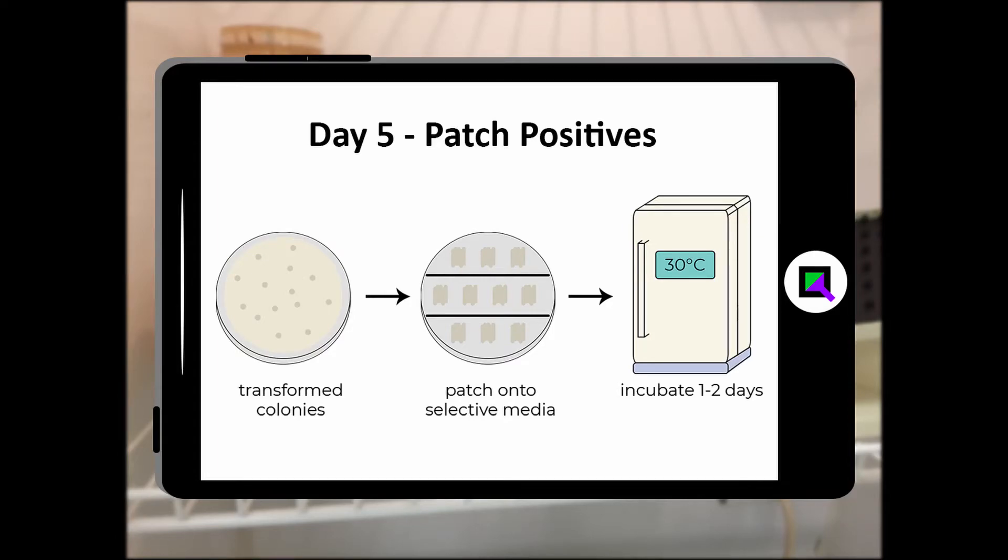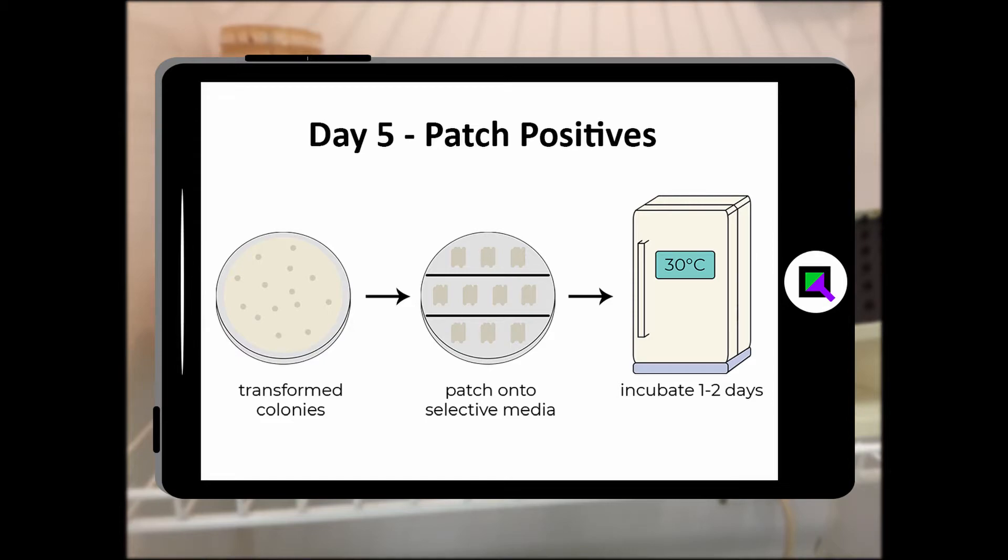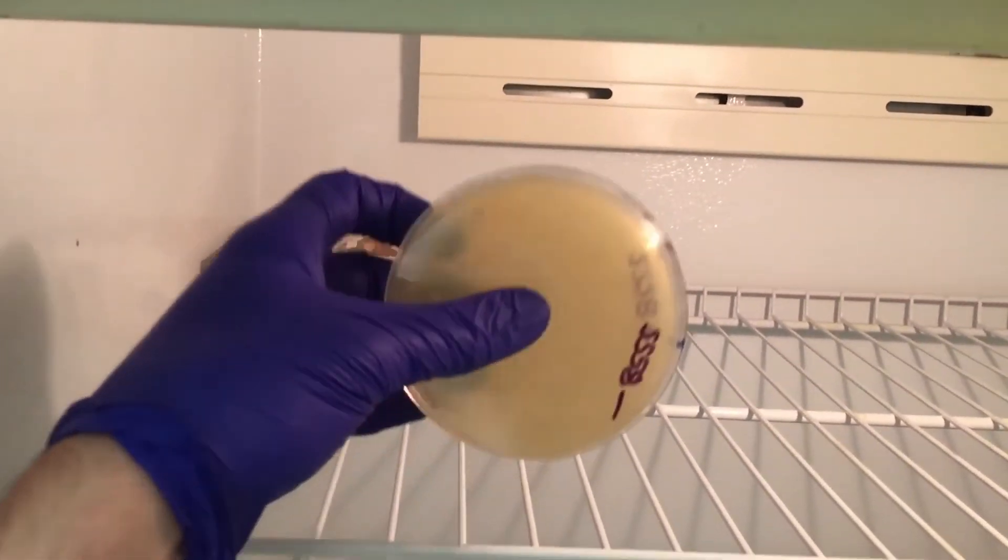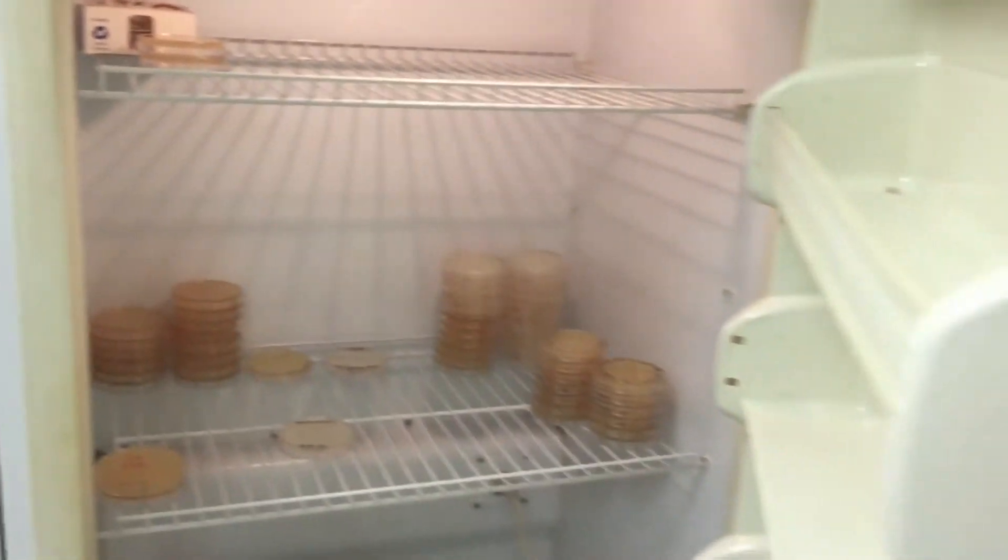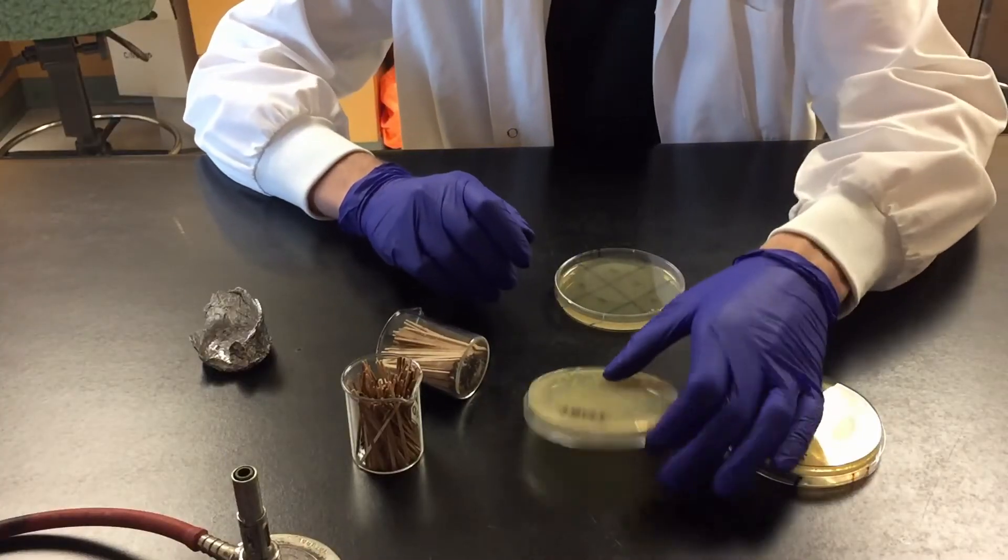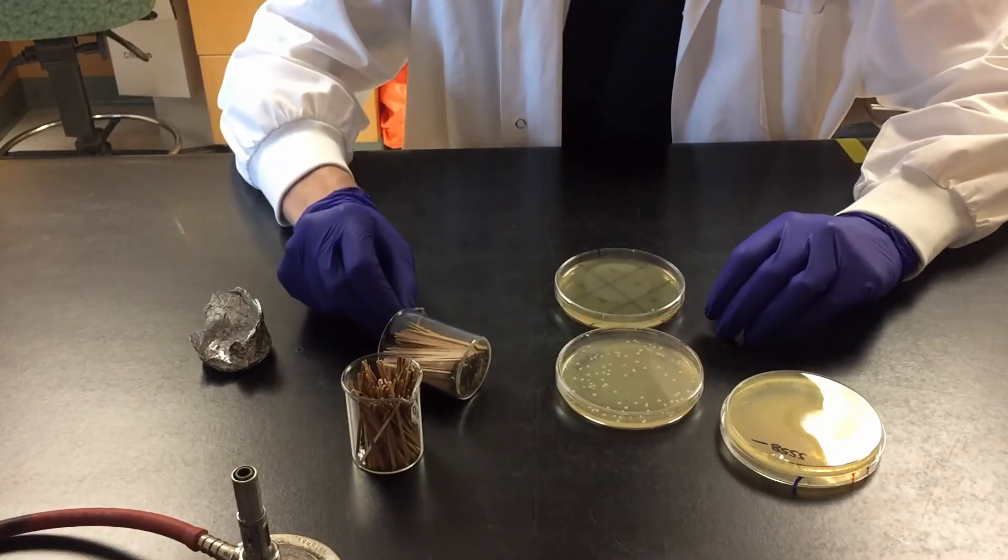Day five, patching positives. The moment of truth, look into the incubator and see if there are colonies on the positive plate. There should be theoretically none on the negative control plate.